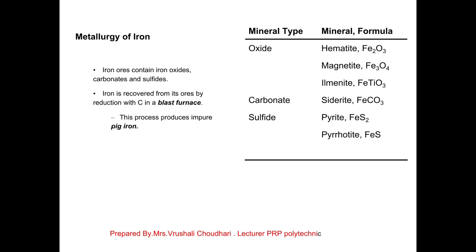In nature, iron is available in the form of oxide, carbonate, and sulfide. Iron oxide Fe₂O₃ is called hematite. Fe₃O₄ is called magnetite. The carbonate ore FeCO₃ is called siderite. The sulfide ore FeS₂ is called pyrite.